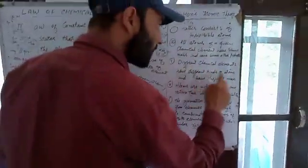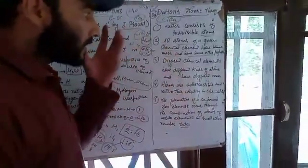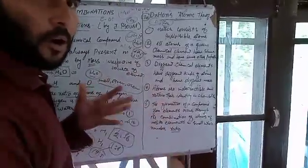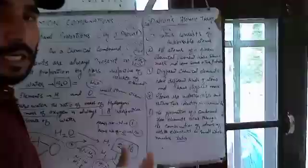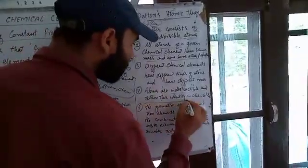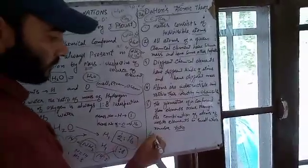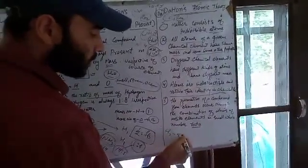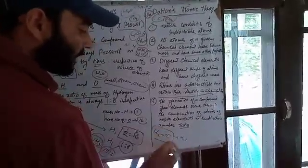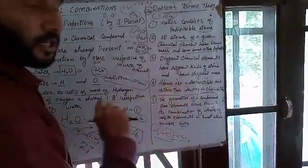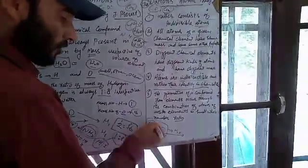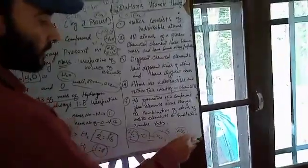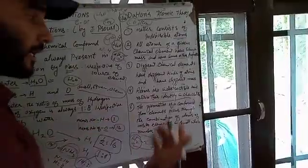Postulate four: atoms are indestructible — we cannot destroy or divide atoms and have them retain their identity in a chemical reaction. For example, H₂ + O → H₂O: when the chemical reaction occurs, the atoms are not destroyed. Hydrogen in H₂ retains its identity whether present in water H₂O or in ammonia NH₃.